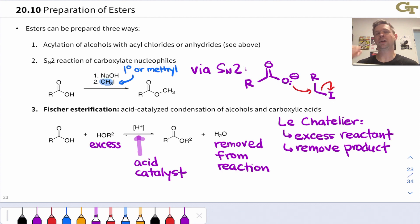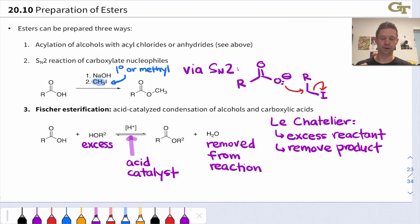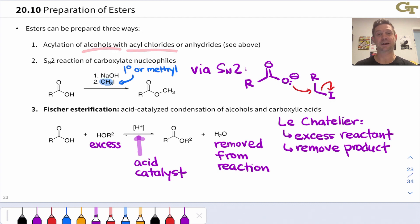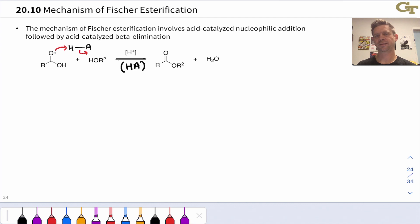This is necessary because there's no intrinsic driving force for the reaction, the way there is in, for example, treatment of an acyl chloride with an alcohol, which is alluded to up here. This works great because Cl- is a fantastic leaving group relative to the alcohol nucleophile. Not so in the bottom here, so we have to use excess alcohol or excess carboxylic acid to drive this reaction toward the products. This reaction of carboxylic acids with alcohols to produce esters and water in the presence of an acid catalyst is known as Fischer Esterification.